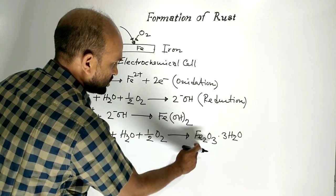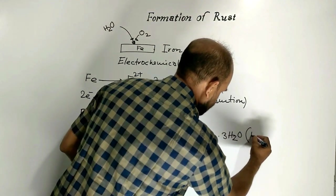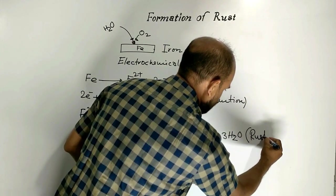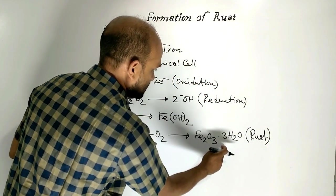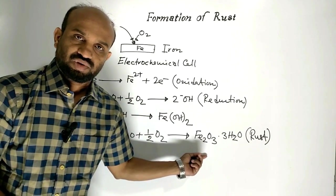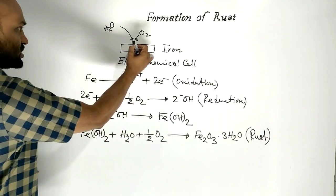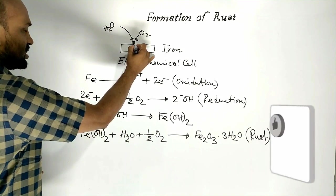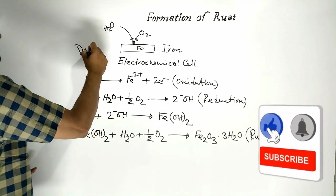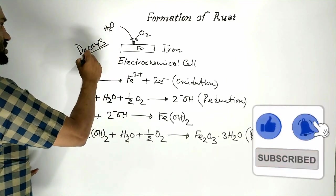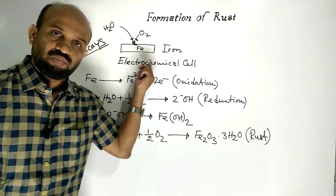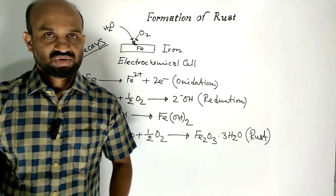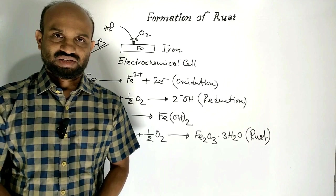which is brown in color. This is known as rust. In this way, rust is formed. And this metal decays. Decay of metal occurs through rust formation.